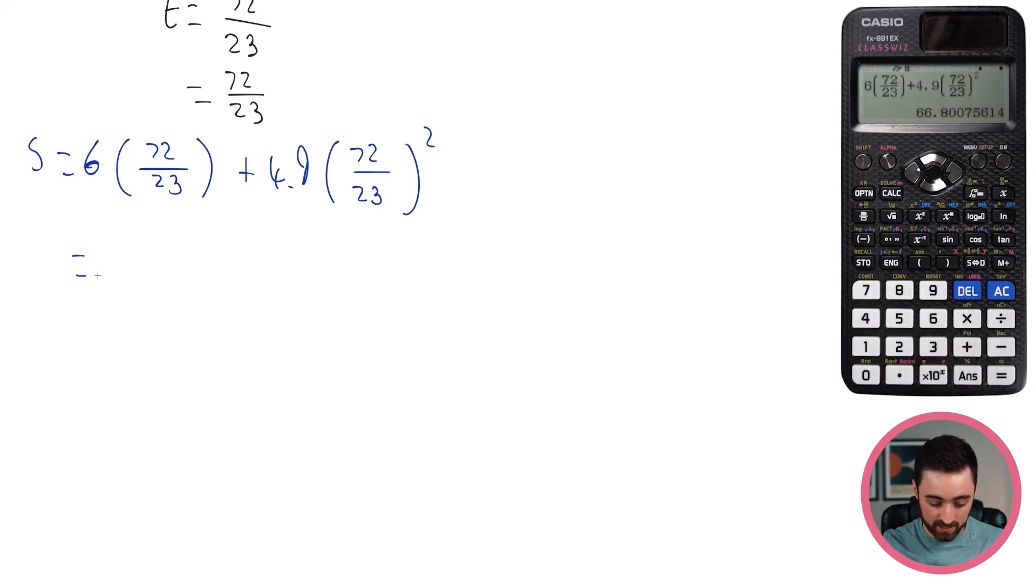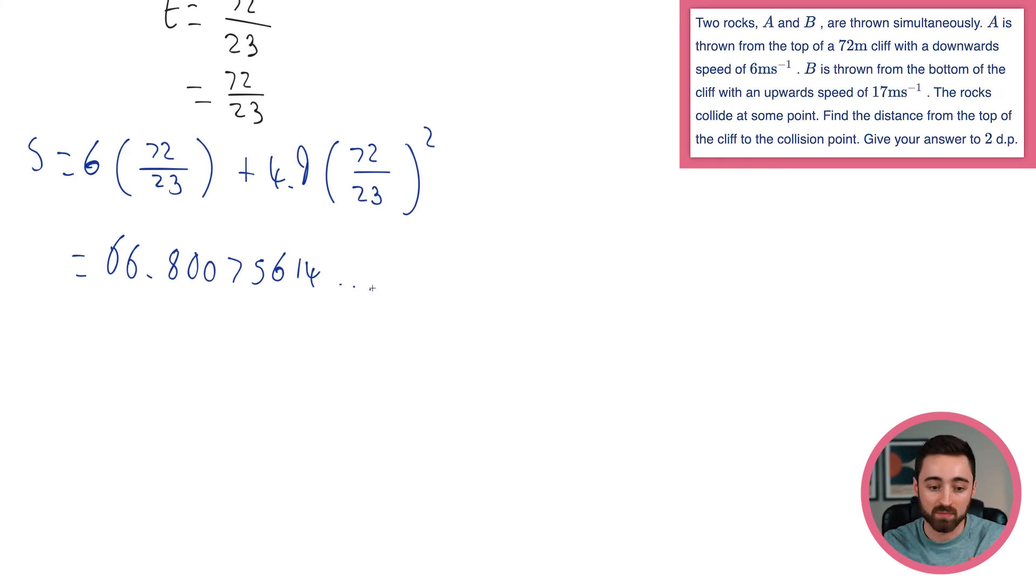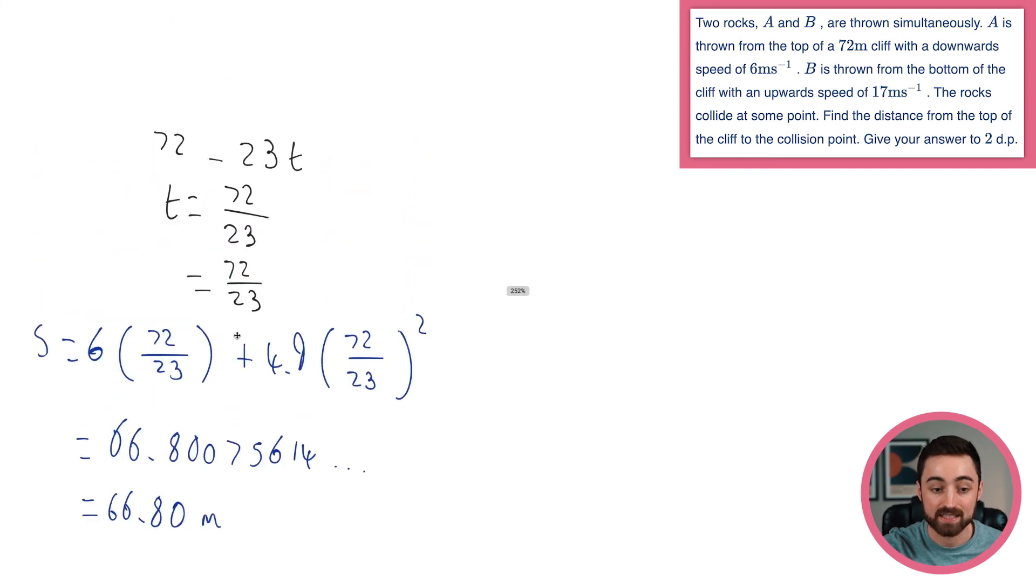And it looks like I am going to get 66.80075614, all of that stuff. And then I'm going to look to the question to see if they've told me what to round it to. And it says, give your answer to two decimal places. So in this case, it will be 66. The second decimal place is zero, but I actually still have to keep that in. So if I was to write this, that would be wrong because that's only one decimal place. I actually have to write this. Even though it's the same as 66.8, we still have to write that. So my answer here, the distance from the top of the cliff to where they collide is going to be 66.80 meters.